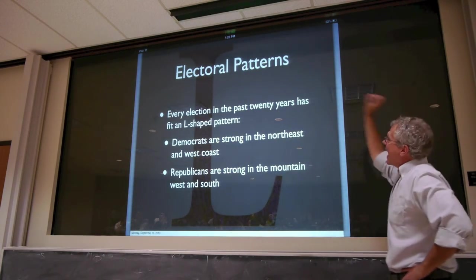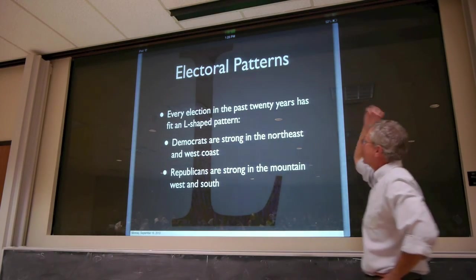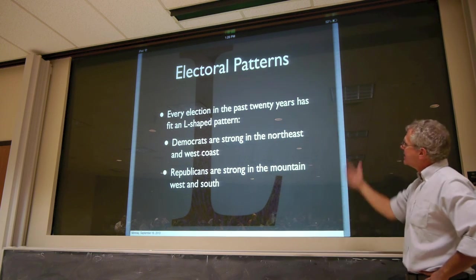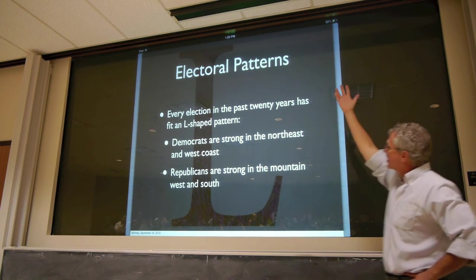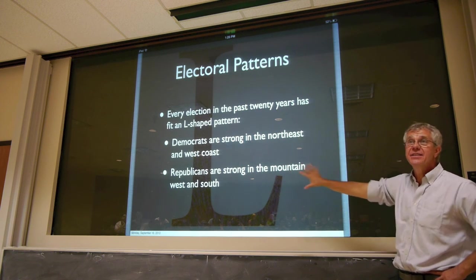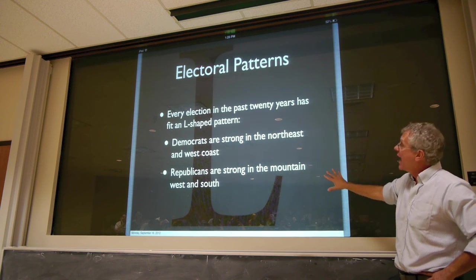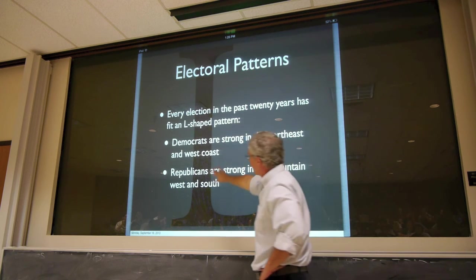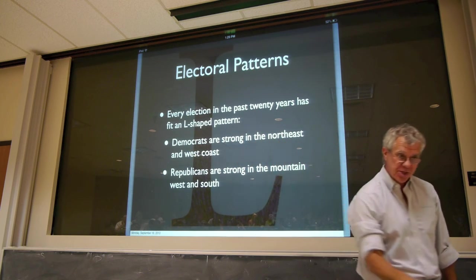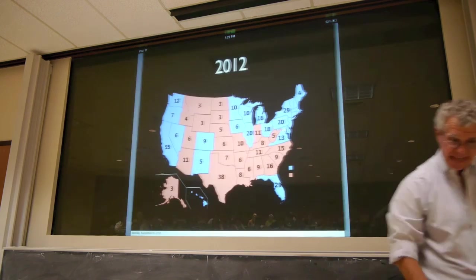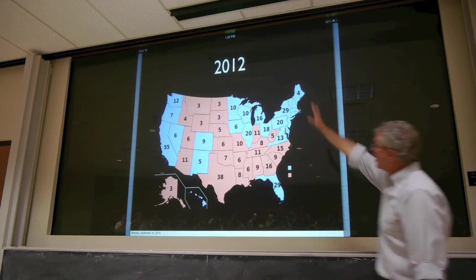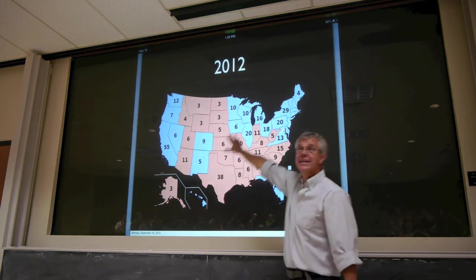Every election in the past 20 years has followed a sort of L-shaped pattern. Democrats are strong in the Northeast and the West Coast. Republicans are strong in the Mountain West and in the South. You find this sort of Republican L flanked by Democratic strength on the two coasts. The last election, 2012, looked like this. You notice the sort of red L-shaped pattern.